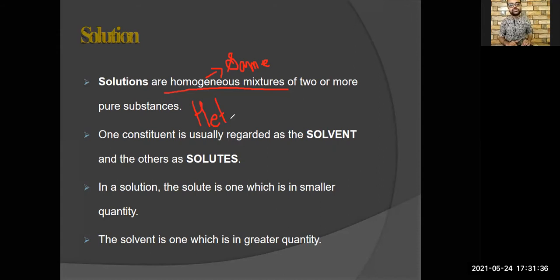Now heterogeneous mixture is that mixture where there is a separation, where there is a boundary between the solute and solvent. Now what is solute and solvent? We'll come to that at the later part. But heterogeneous mixture is something which exists in different phases. Homogeneous mixture is something which exists in same phase.